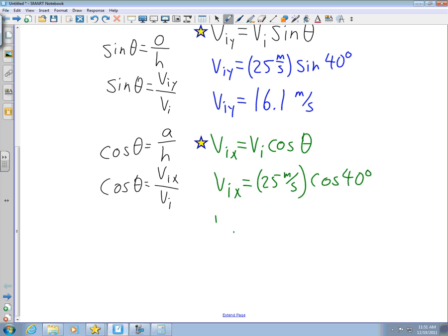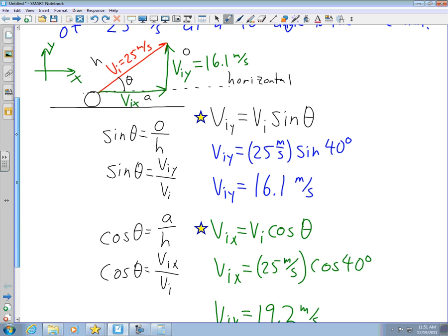So I have VIX is equal to 19.2 meters per second. I have to go back up and look at my diagram. VIX is equal to 19.2 meters per second. And there we have it, components of the initial velocity of a projectile.